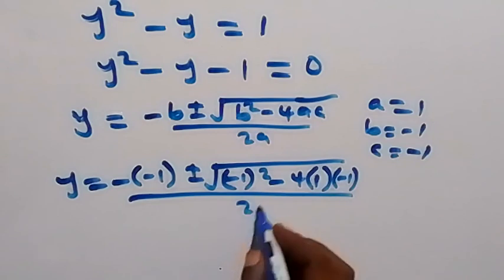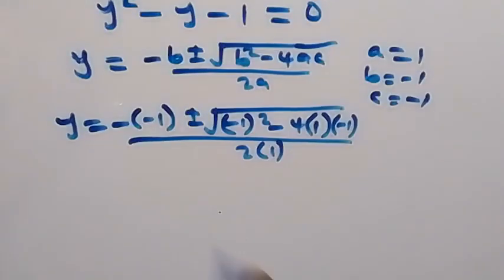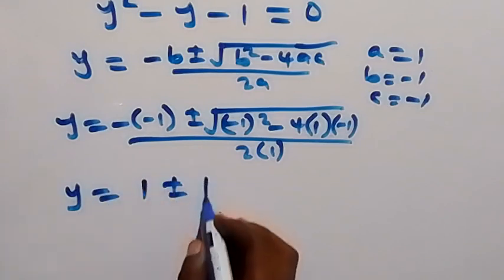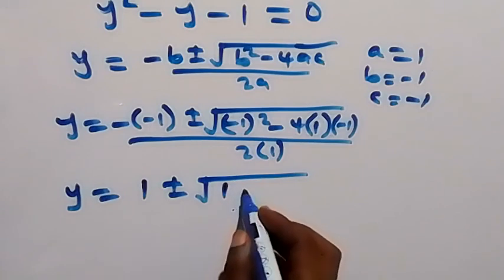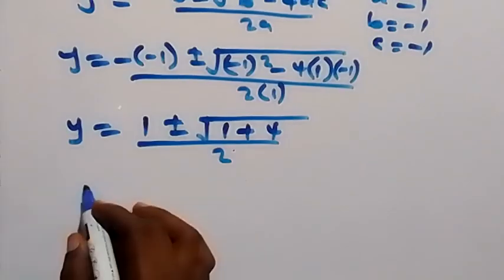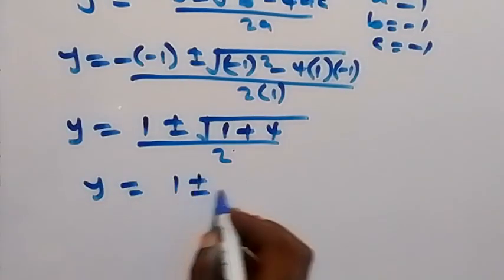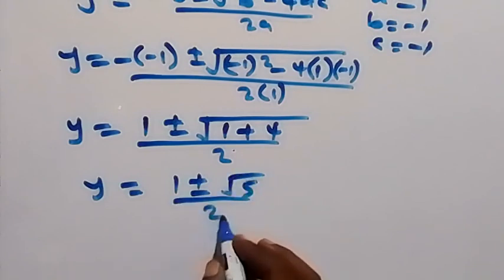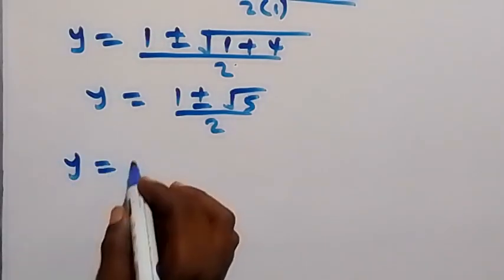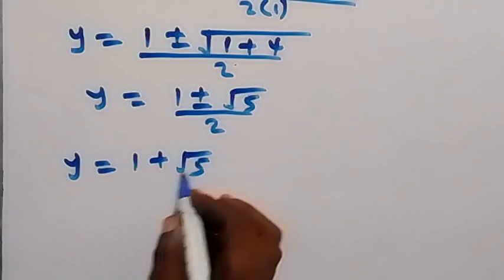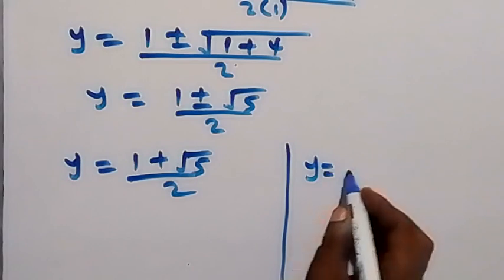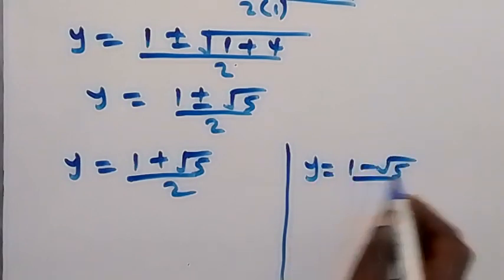Then over 2 times 1. This becomes y equals to 1 plus or minus square root of 1 plus 4, over 2. So we have y equals to 1 plus root 5 over 2, or y equals to 1 minus root 5 over 2.